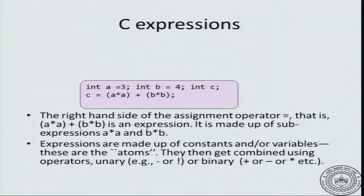Let us consider a few example expressions. For example, if a is 3, b is 4, and C is declared as type int, then C equals a times a plus b times b. The right hand side of the assignment operator is an expression, and that expression has sub-expressions a star a and b star b within parenthesis. An expression can be made up of variables or constants, which are the basic atomic components, and sub-expressions can be combined into bigger expressions using operators.